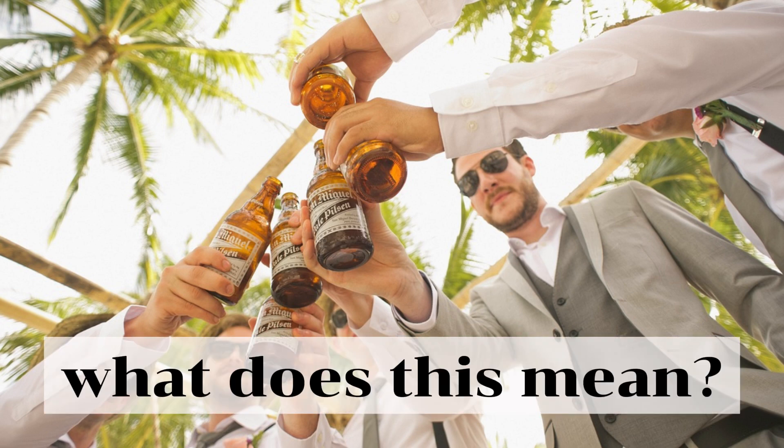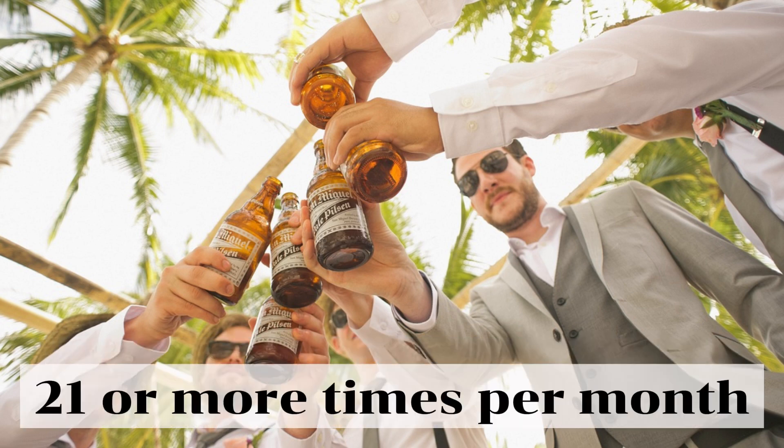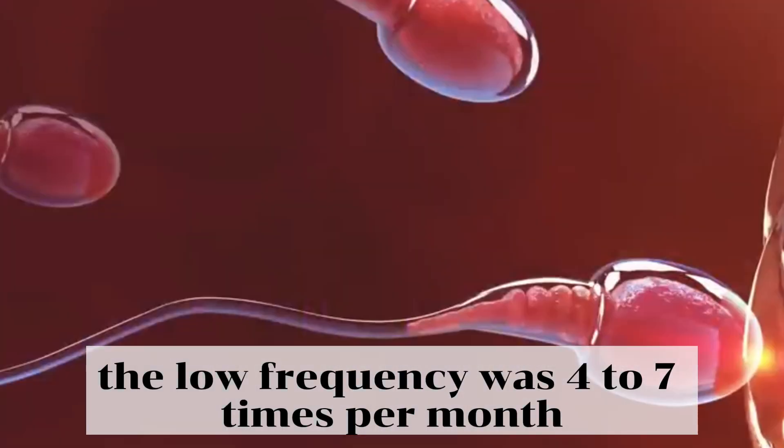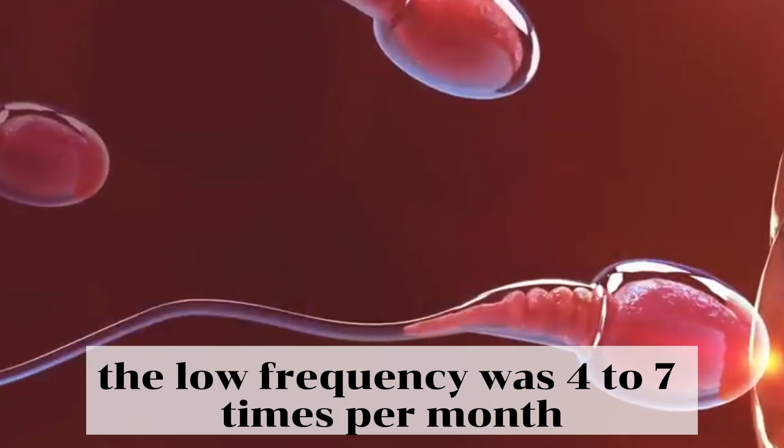Of course, everyone is probably wondering what high frequency versus low frequency means. Well, the high frequency was 21 or more times per month, which indicates that these were quite an active group of people, and the low frequency was 4 to 7 times per month.